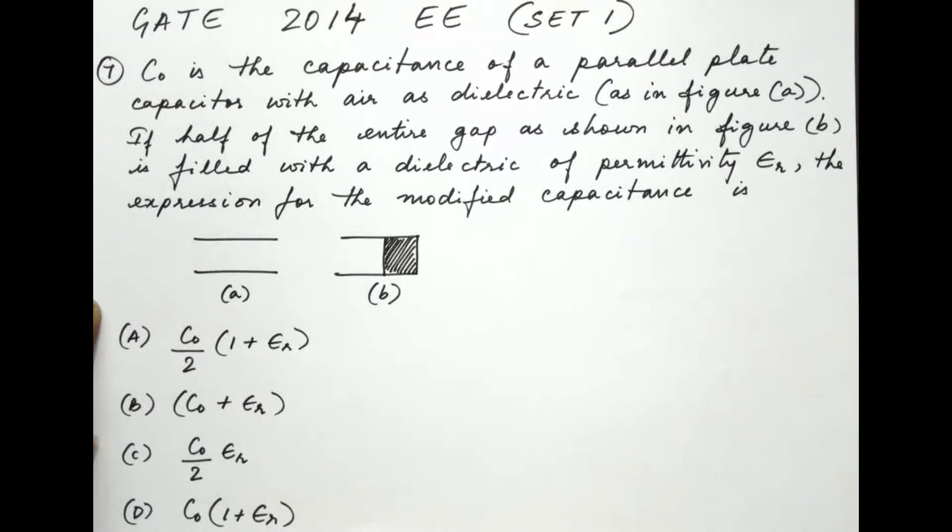Here's the next question, number 7. The question reads: C0 is the capacitance of a parallel plate capacitor with air as dielectric, as in figure A.